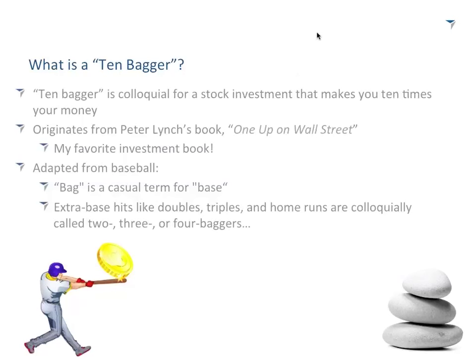The thrust of this presentation is how to find 10-baggers. We've got to understand what a 10-bagger is. It's really a colloquial term — slang in the stock market for an investment that makes you 10 times your money, a 900% return. There's no magic reason it's 900%. A 10-bagger investment is a fantastic investment — it makes you a huge amount of money, multiples of the sum you put in, as it grows over time.